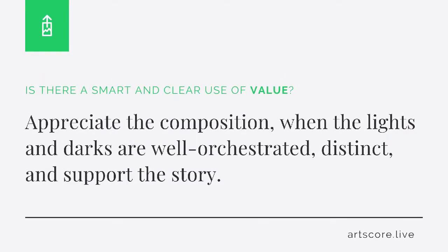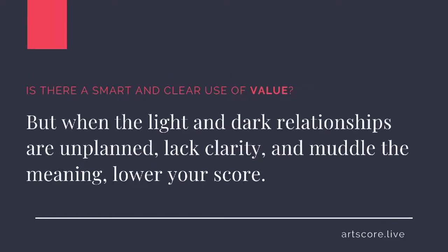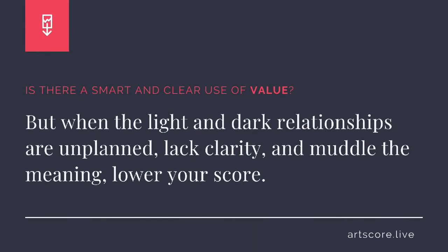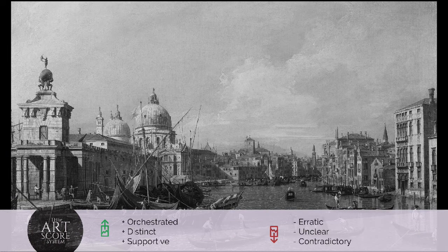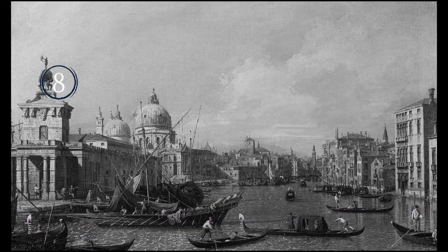Value. Is there a smart and clear use of value? Appreciate the composition when the lights and darks are well orchestrated, distinct, and support the story. But when the light and dark relationships are unplanned, lack clarity, and muddle the meaning, lower your score. I scored the arrangement an 8. I see how the values are orchestrated to support the subject and identify the components within the composition. What's your score?